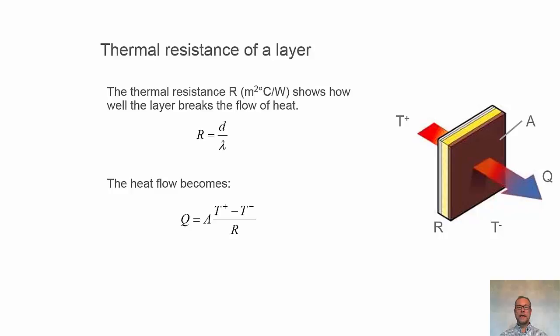For a specific layer, we can write the expression for heat flow. Q, the heat flow, equals the area times the temperature difference divided by the thermal resistance. If we have a layer with double thermal resistance, we have half the heat flow through the layer.